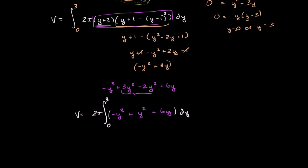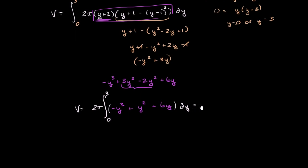And so now we're essentially ready to take the antiderivative. This is going to be equal to 2 pi times the antiderivative of this business evaluated at 3 minus evaluated at 0. So the antiderivative of y to the third is y to the fourth over 4. So this is negative y to the fourth over 4.